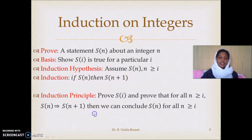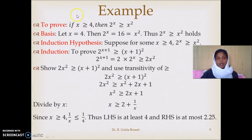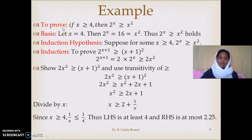Let us take an example. We are given: if x is greater than or equal to 4, then 2^x is greater than or equal to x². This we want to prove. The fundamental value for x is given by the condition x ≥ 4, so the smallest value that x can assume is 4.